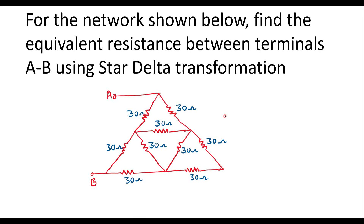In this video, I will consider one numerical to find equivalent resistance between terminals A and B. For the network shown below, find the equivalent resistance between terminals A and B using star-delta transformation. Here this is the given circuit. We need to find the equivalent resistance between terminals A and B, and we are supposed to use star-delta transformation.